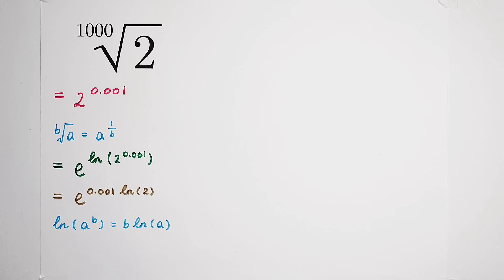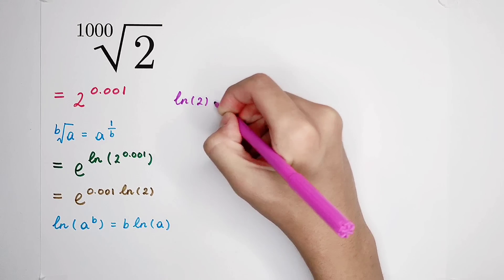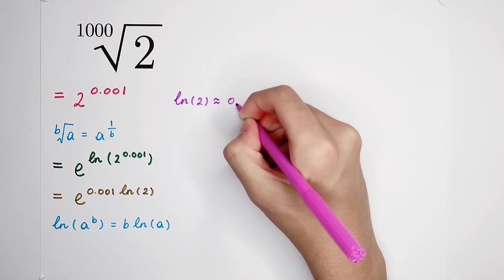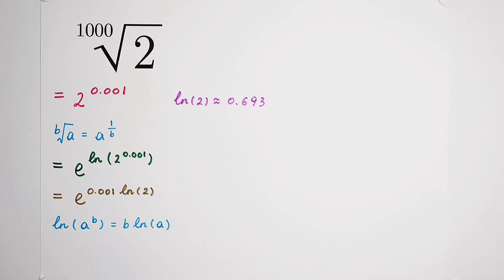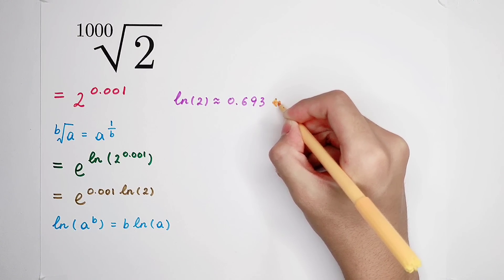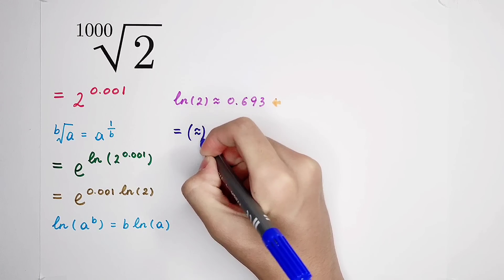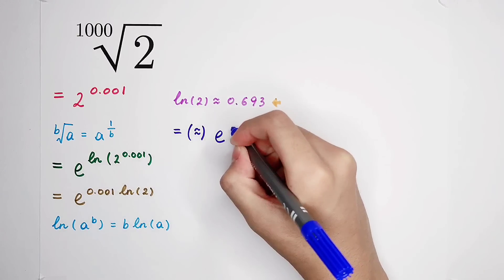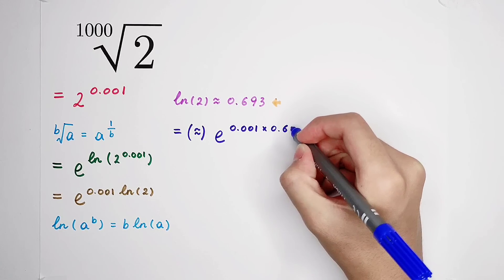We know the natural log of 2 — if you don't know it, memorize it. The natural log of 2 is approximately equal to 0.693. I will make a video on the approximation of logarithms, so look forward to it. So now substitute: we have e to the power of 0.001 times 0.693.